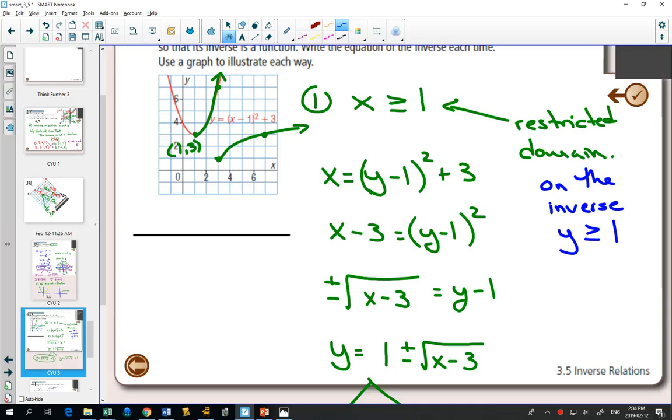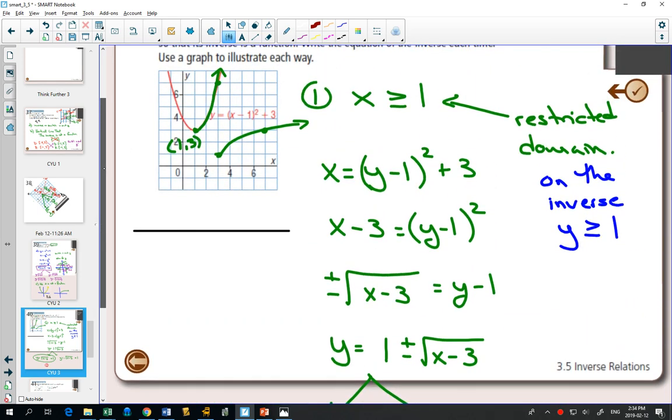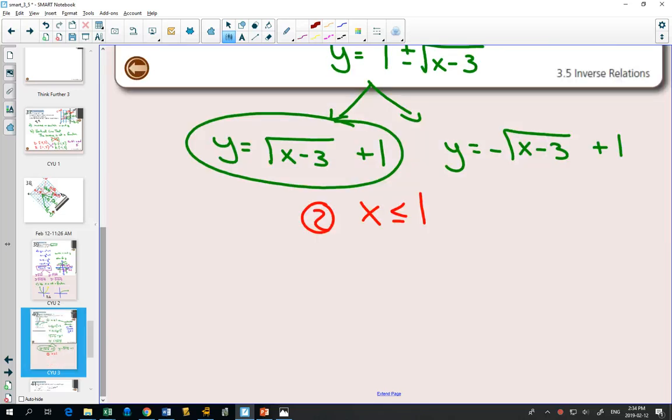Now for our second restricted domain, number 2, actually I'll do number 2 in red because it will match up with the red part of our graph. Well now, that's when x is less than or equal to 1. That would be a second way to restrict the domain. If I restricted the domain that second way, the equation of the inverse for that second way would be...